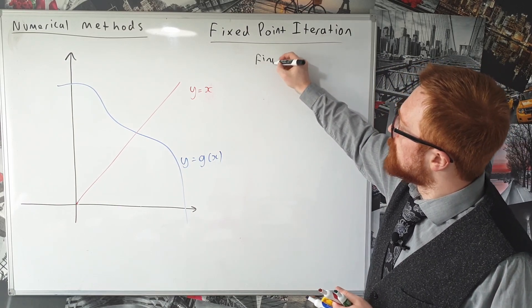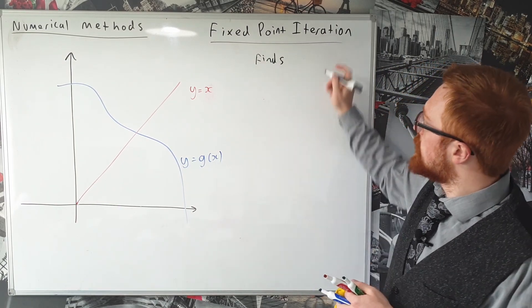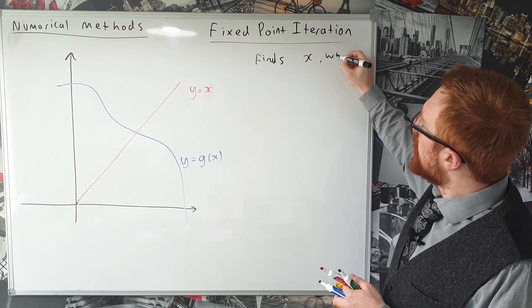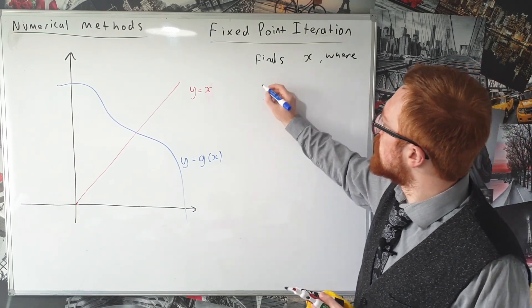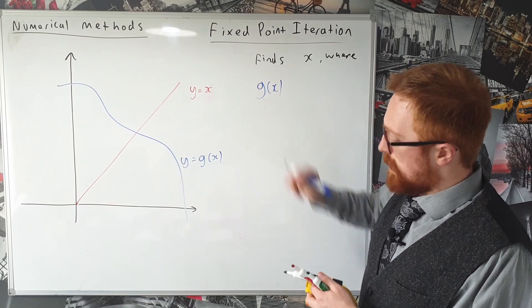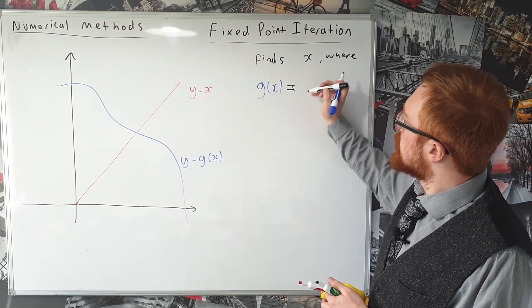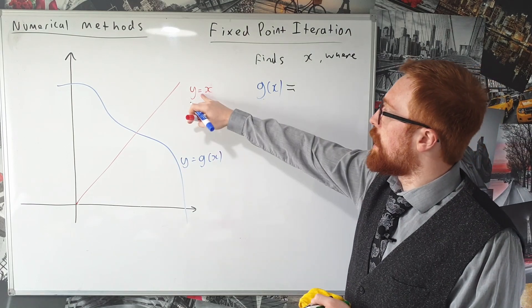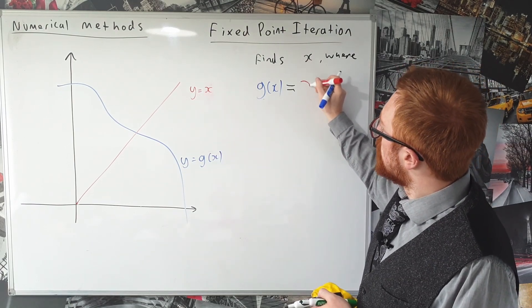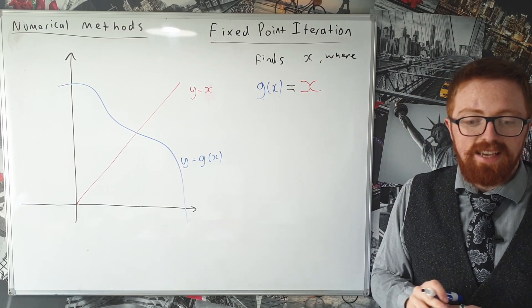Let's write this algebraically. It finds x where, well this curve is g of x, and it finds x where g of x is equal to, well this second curve is y equals x. So we're looking for the point where g of x is equal to x.